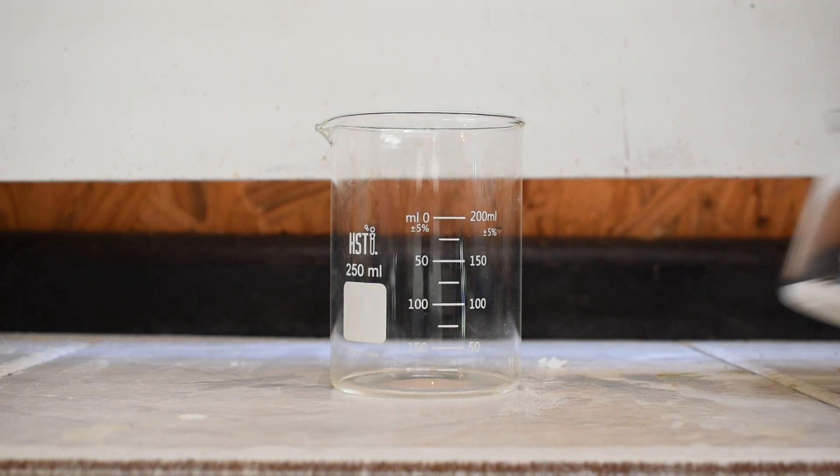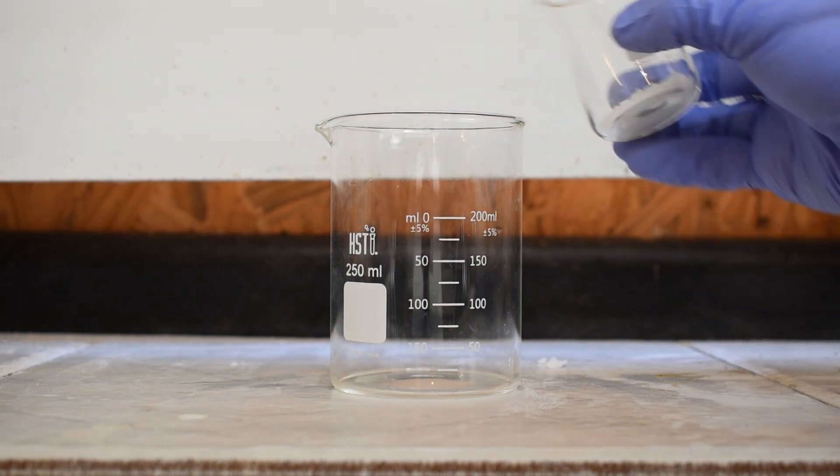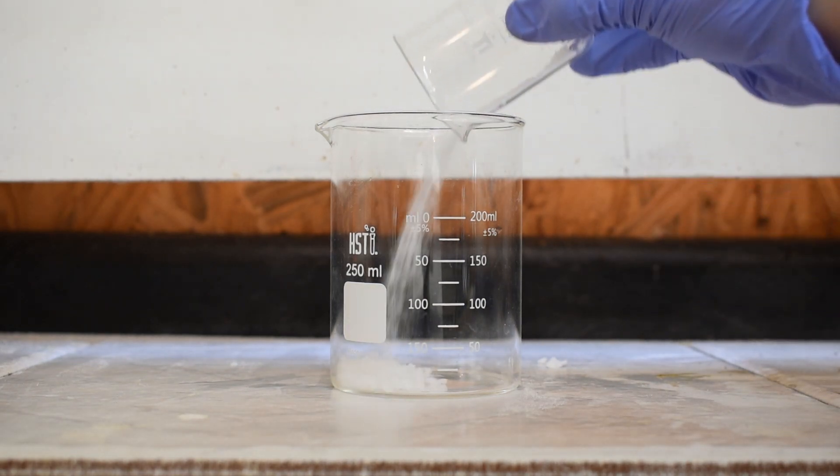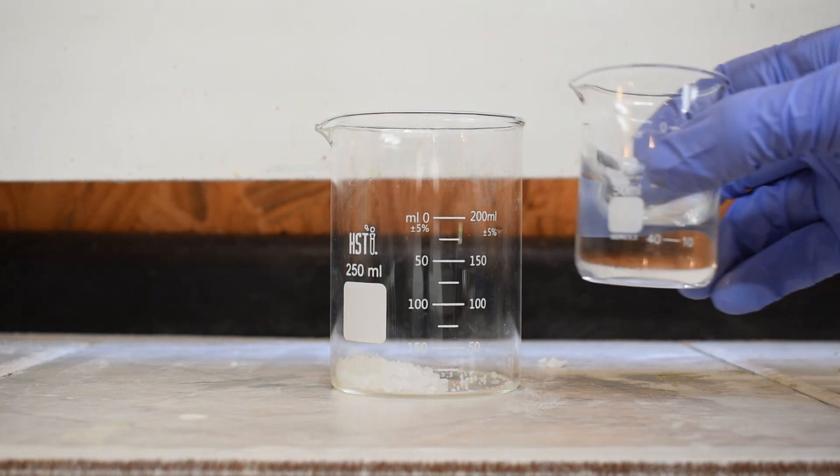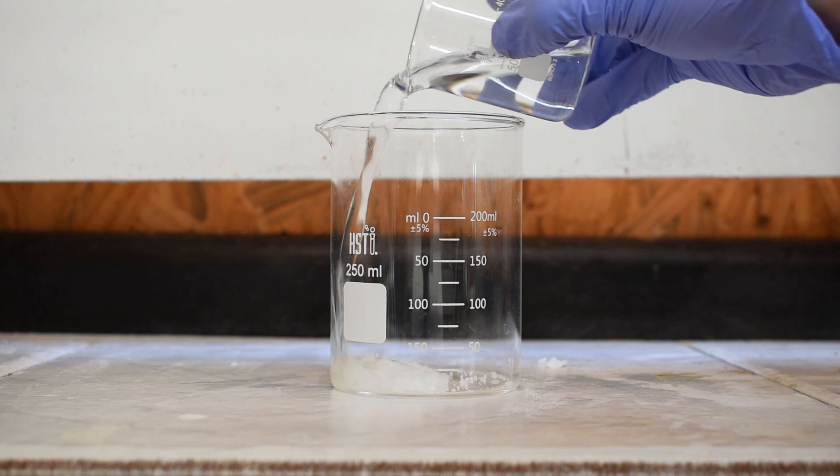Anyway, to get started we need to make some elemental iodine first. So to a beaker I added about 10 grams of potassium iodide. I then rinsed out the smaller beaker with about 30 milliliters of water.